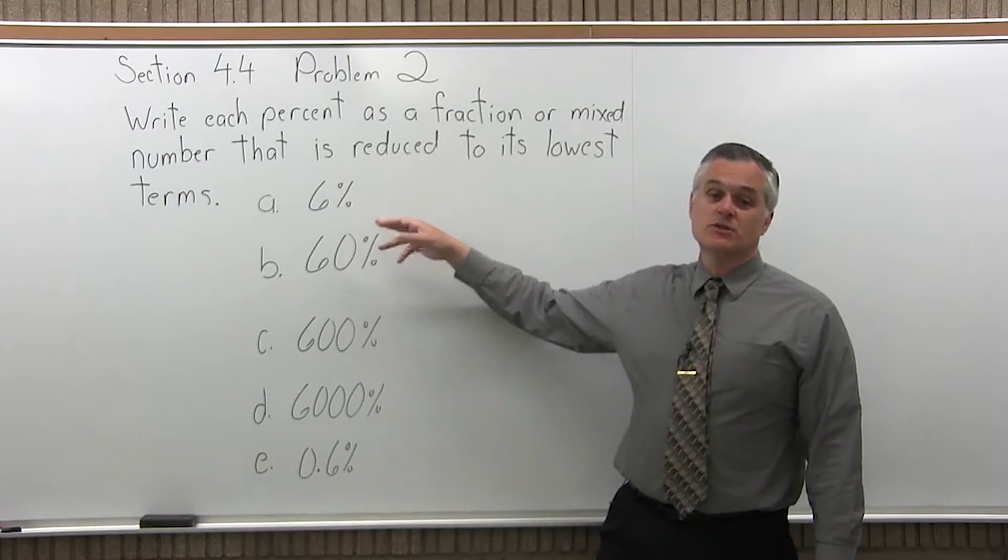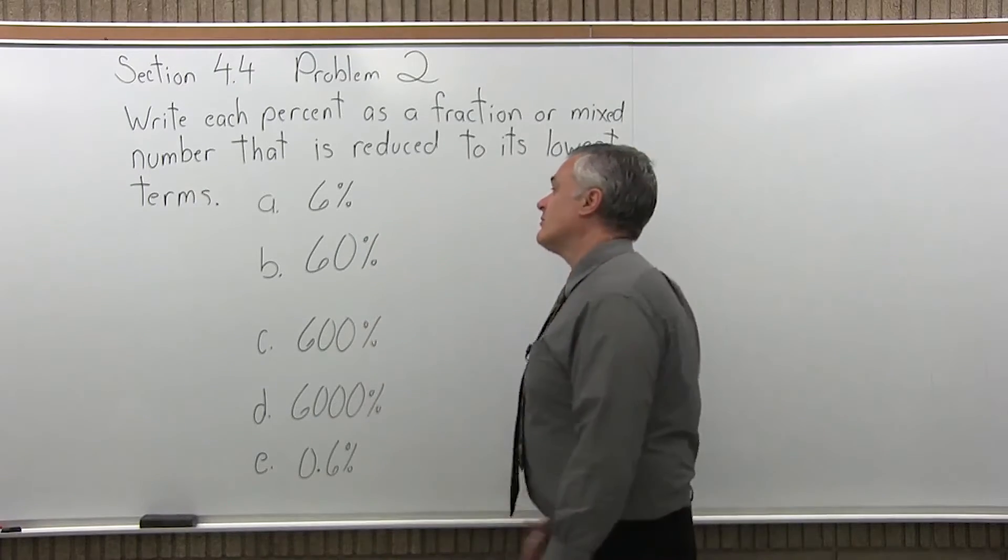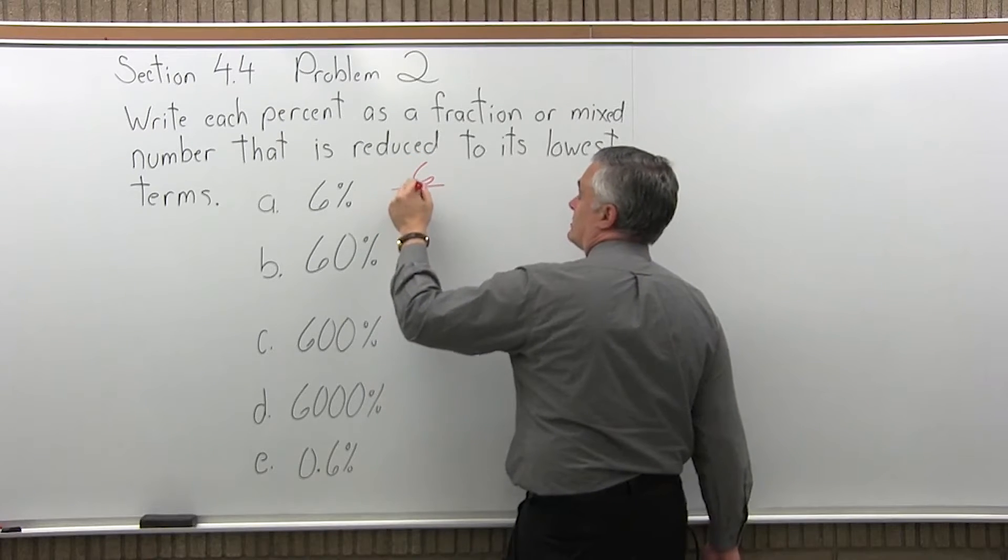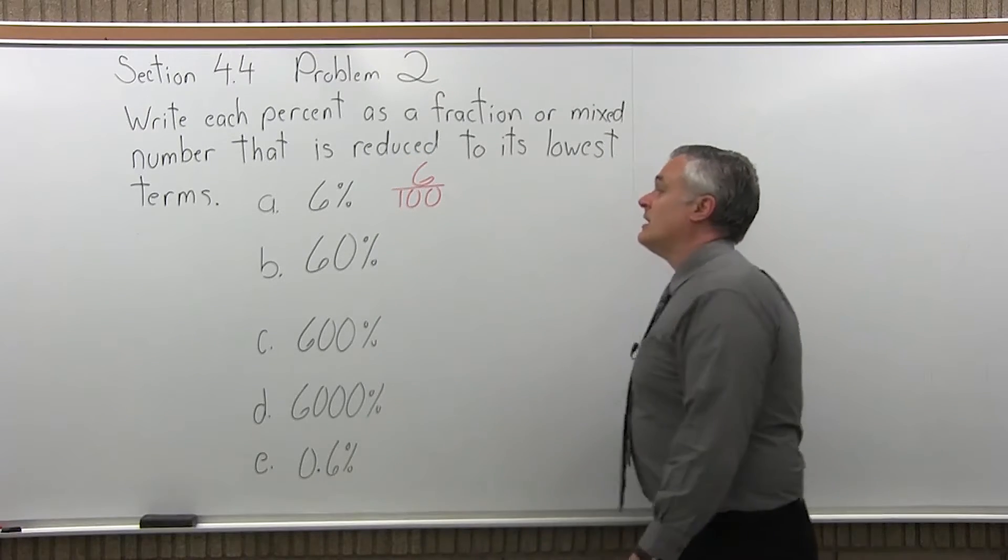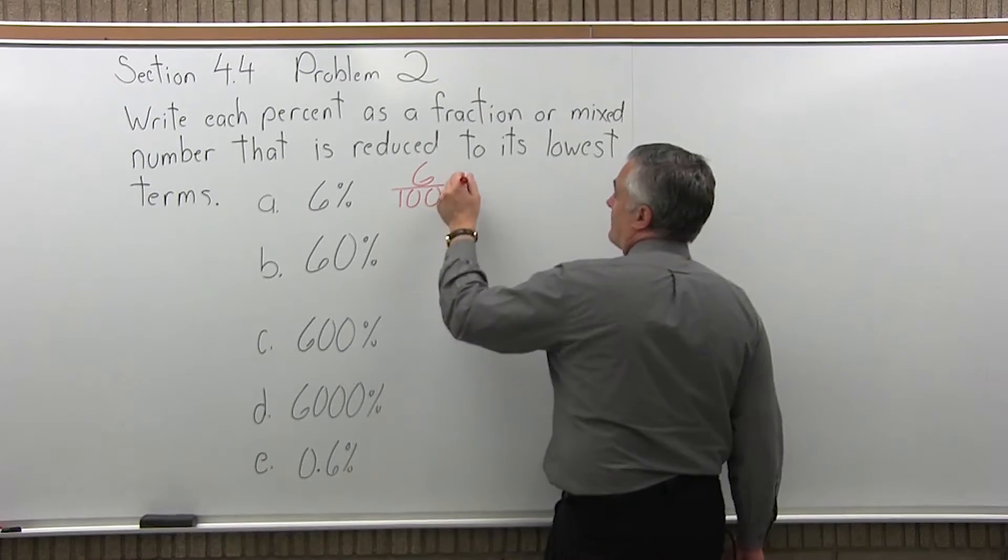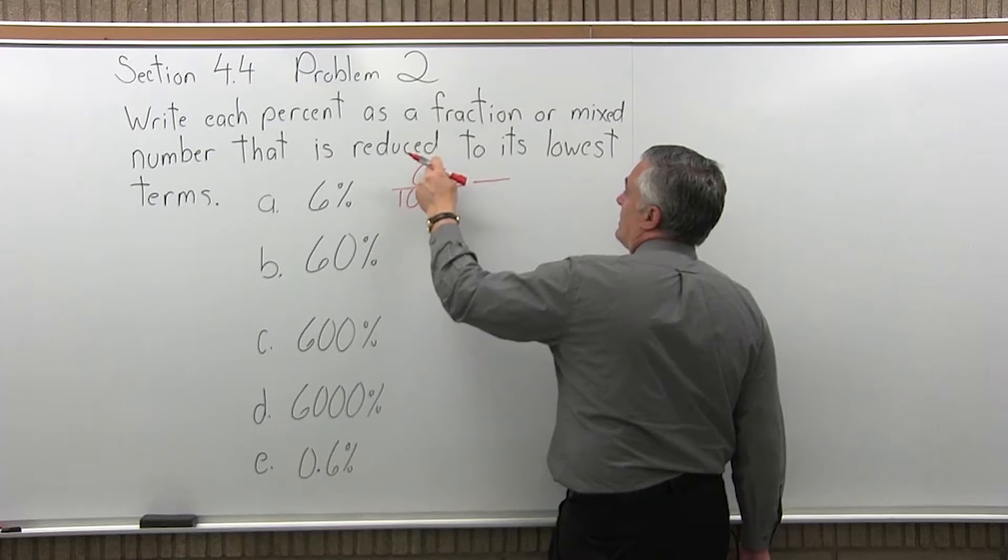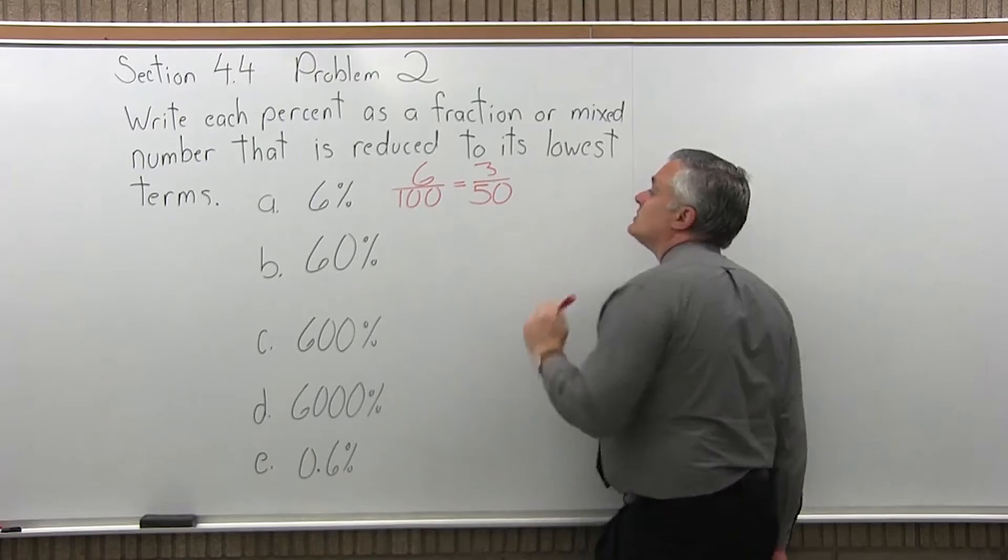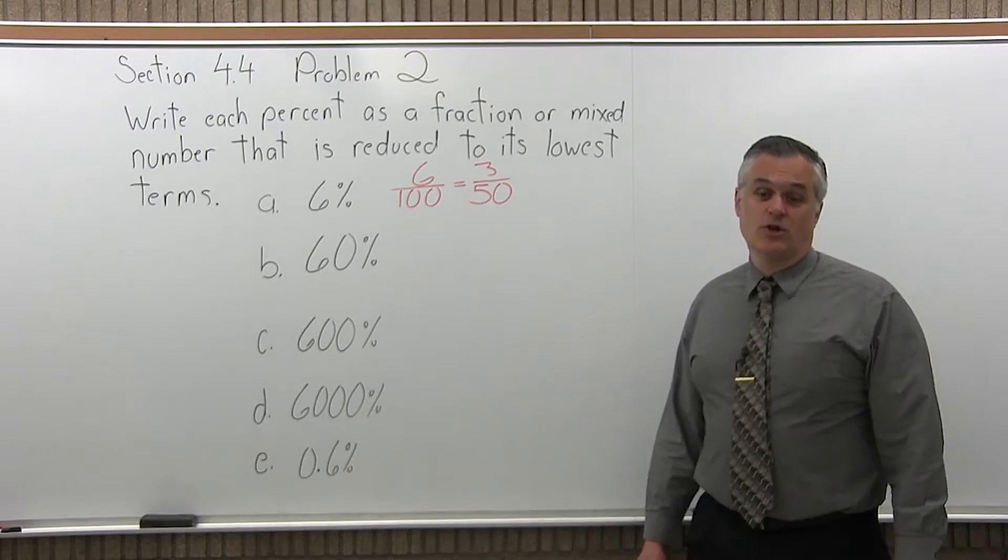The first one is 6%. So with any of these to make a percent go to a fraction, what you do is you write the percent over 100, so I have 6 over 100. Now can I reduce that? Well they're both even, so I can at least cut it in half for the top and the bottom. So half of 6 is 3, half of 100 is 50. Can I reduce any further? No. That's as far as it'll go. So 3 over 50 is the same as 6%.